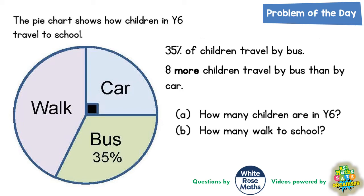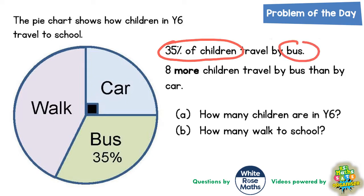Welcome, problem solving fans, to another problem of the day. This is all about how children travel to school. The pie chart shows how children in Year 6 travel to school. 35% of the children travel by bus, and 8 more children travel by bus than by car. How many children are in Year 6, and how many walk to school?